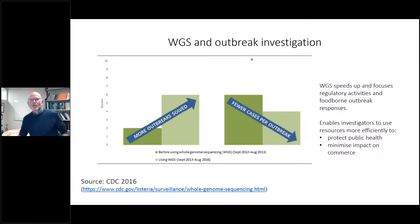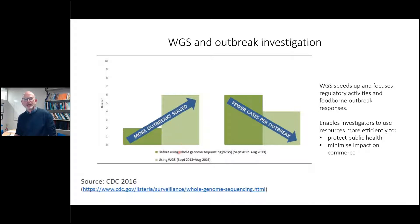One of the reasons why whole genome sequencing has taken off so much is the decline in sequencing costs — it's now just a fraction, on a log scale, of what it used to be just two decades ago. In outbreak investigation, compared to previous technologies, whole genome sequencing has resulted in more outbreaks being solved and fewer cases per outbreak. This is better for public health and helps minimise impact on food businesses and international trade — very important outcomes.